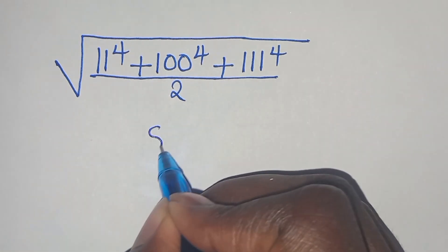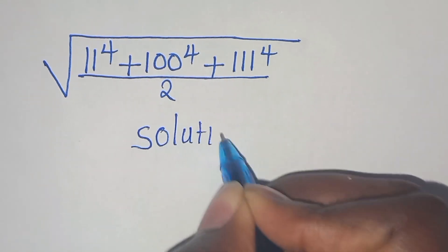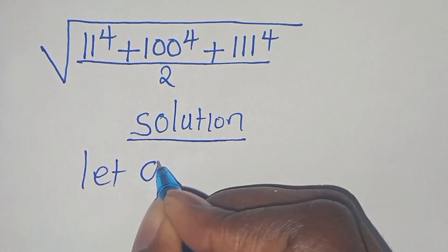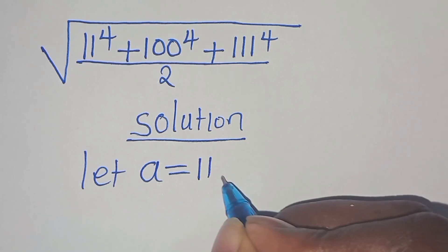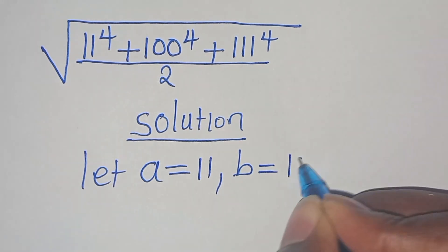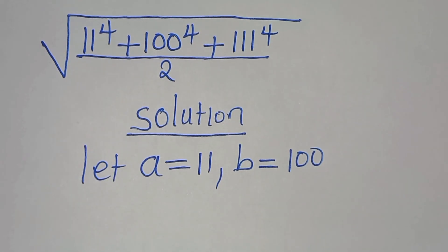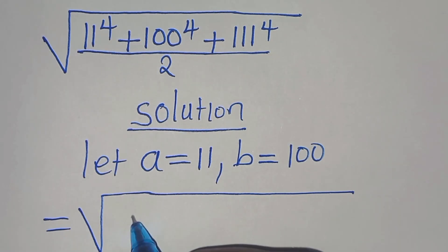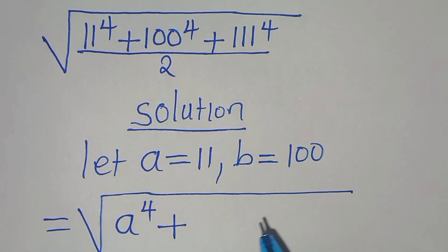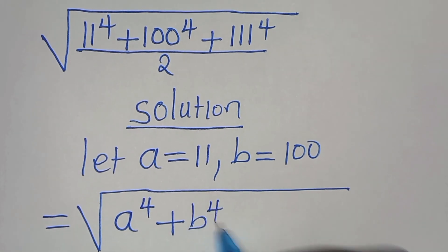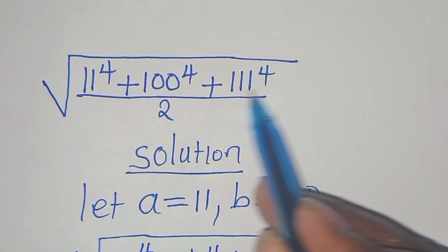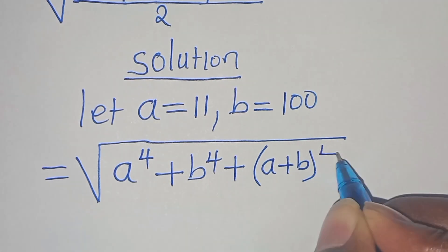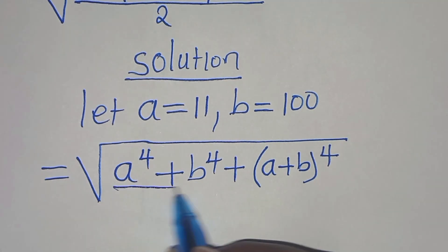So let's present a solution here. From this square root math problem, we can let a be equal to 11, and we can let b be equal to 100. So in this case, we can express this as the square root of a to the power of 4, then plus 100, which is b to the power of 4, then plus 111 — which is the same thing as a plus b — raised to the power of 4, everything divided by 2.